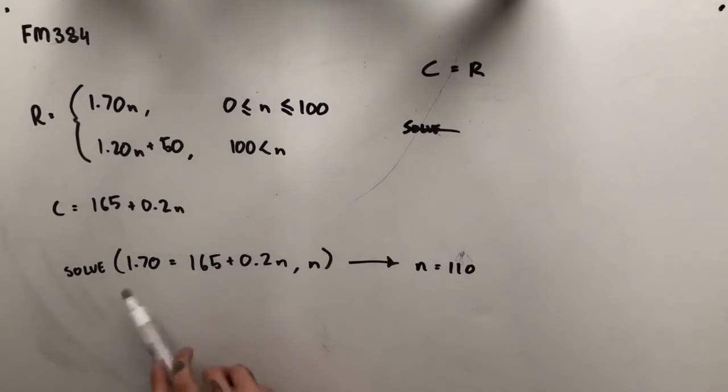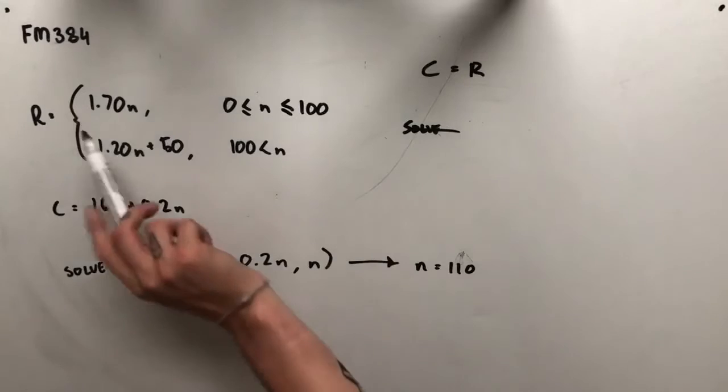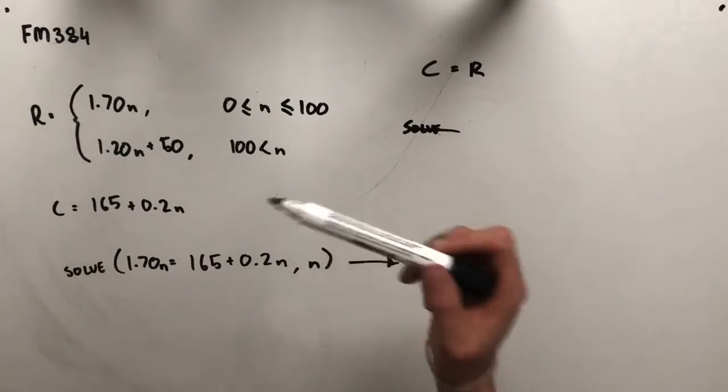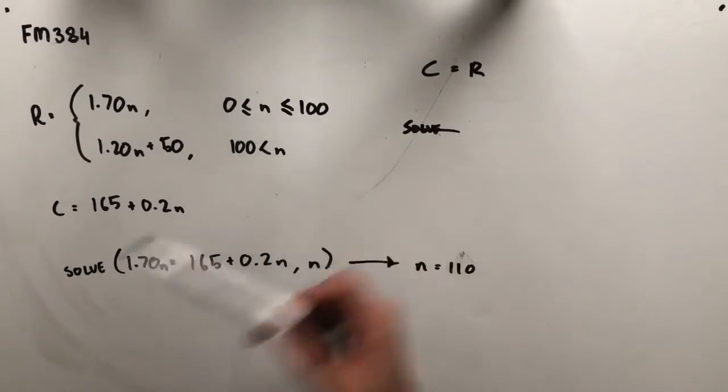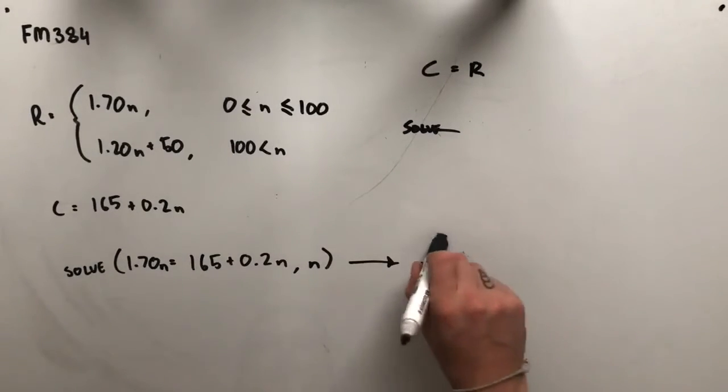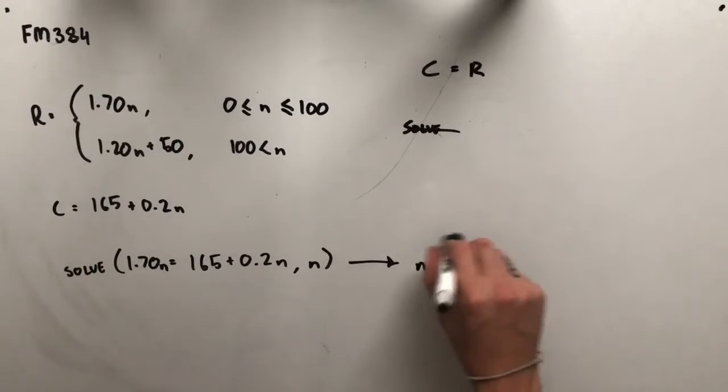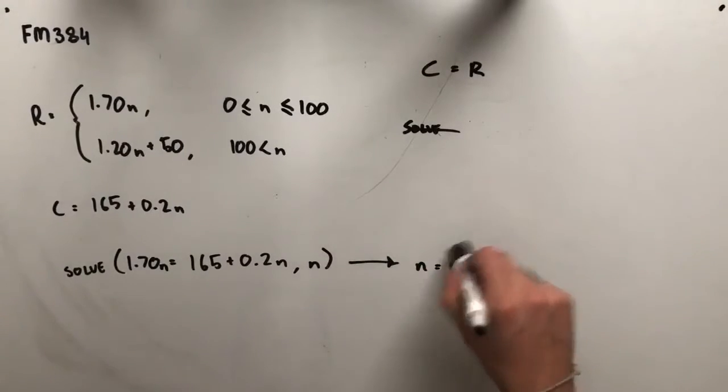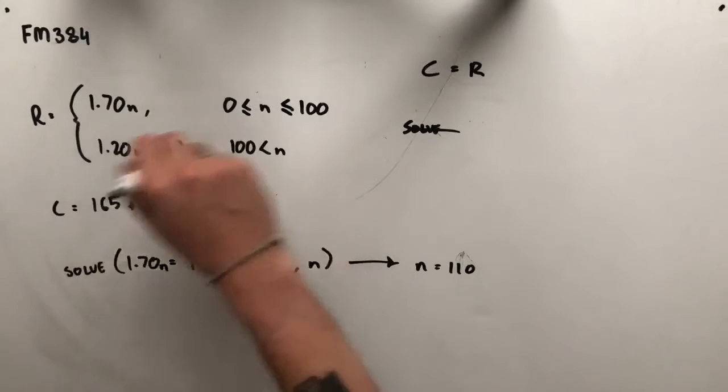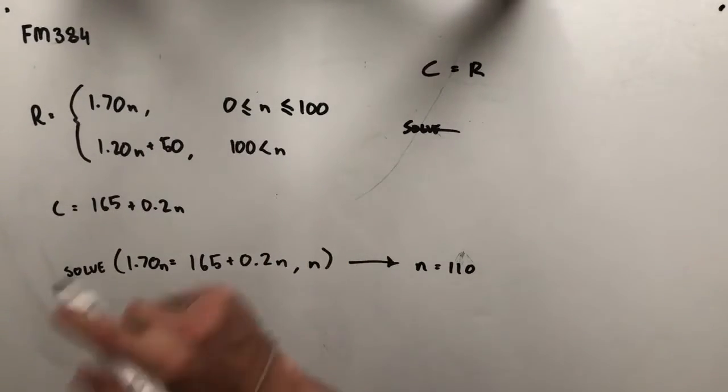Now, this is telling us that according to this formula, we'd need to sell 110 delicious cheese and Vegemite scrolls in order to break even. The problem with this is that this 1.70N revenue equation is only valid for values of N between 0 and 100. Now, we've got a value here of 110. If we sold 110 cheese and Vegemite scrolls, well, then that's 10 scrolls that should be following this revenue rule here, and they're not.